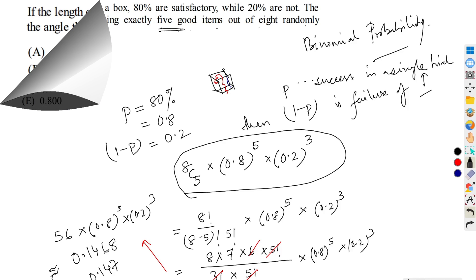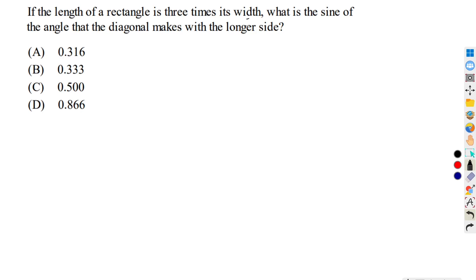If the length of a rectangle is three times its width, what is the sine of the angle that the diagonal makes with the longer side? Let us first draw the rectangle. Since the length is three times the width, let us name this as ABCD. We assume that the width, that is AD equals BC equals x. Therefore, from the given condition, the length AB equals DC equals 3x. Now we have to determine the sine of the angle that the diagonal AC makes with the longer side. Let's assume this is theta. We have to determine sine theta.